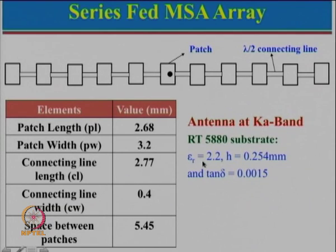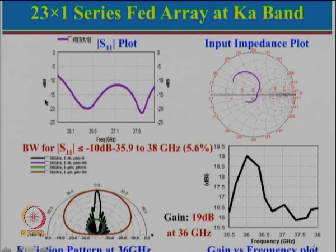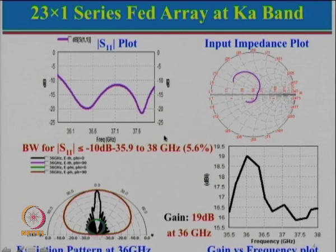At this frequency and for this substrate, we calculated the patch length and width using the standard equations for rectangular microstrip antennas. The connecting length is taken as approximately lambda/2. We chose a connecting line width of 0.4 mm, studying the effect of varying the width from 0.2 to 0.5 mm and finding 0.4 mm is a good option. The center-to-center spacing between patches is about 5.45 mm. Looking at the S11 plot, the bandwidth is almost 2 GHz — a very large bandwidth, though in percentage terms it is only about 5.6%.